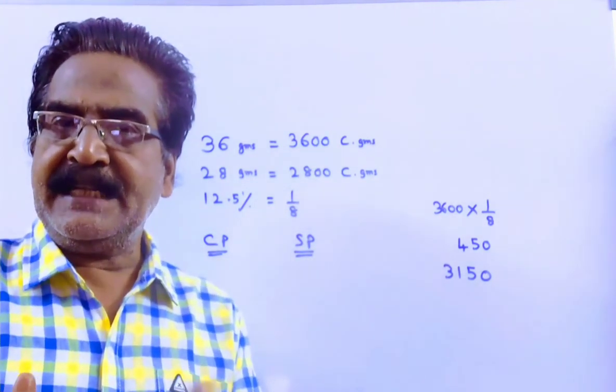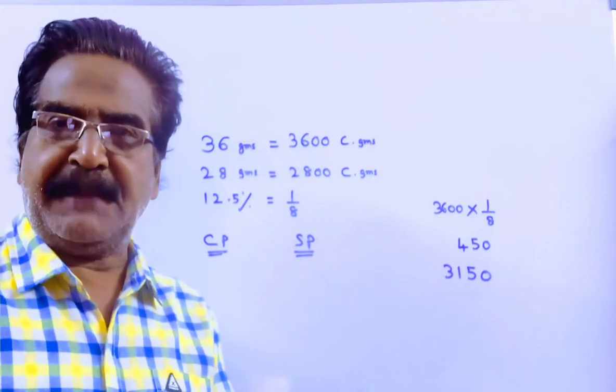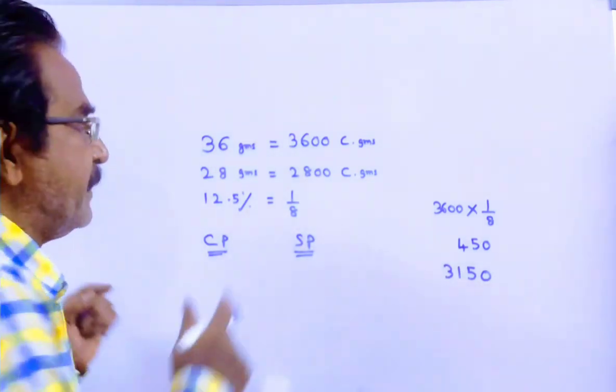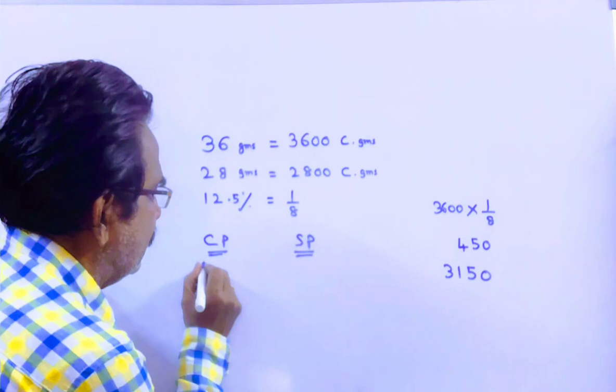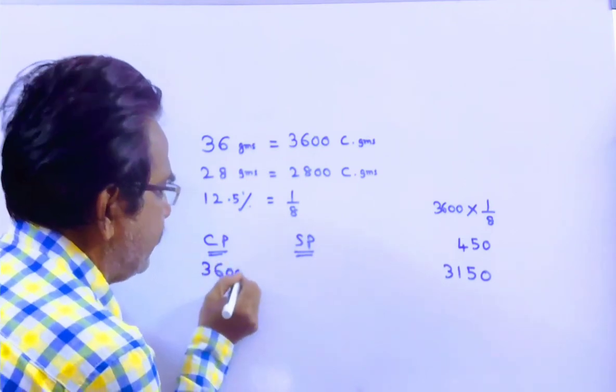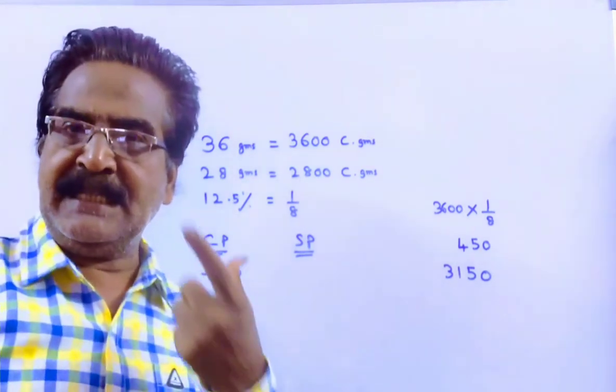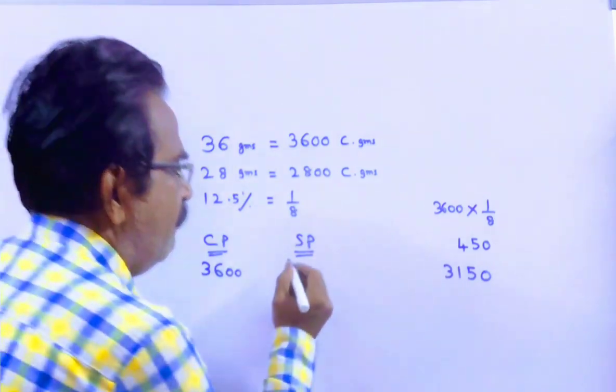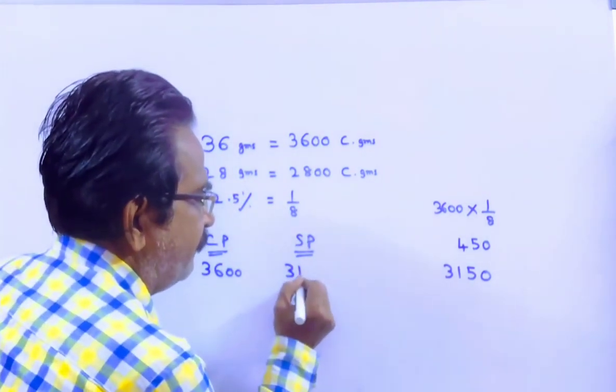Friends, selling at 12.5% loss means selling 3600 rupees worth goods for rupees 3150.